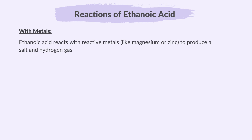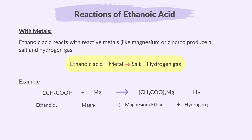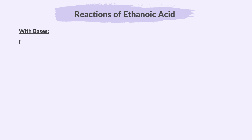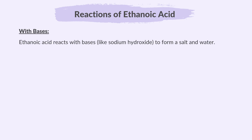Ethanoic acid reacts with reactive metals like magnesium or zinc to produce a salt and hydrogen gas. The general reaction is: ethanoic acid plus metal gives salt and hydrogen gas. For example, ethanoic acid and magnesium gives magnesium ethanoate and hydrogen gas. So the salt produced is magnesium ethanoate.